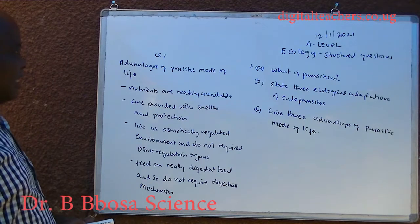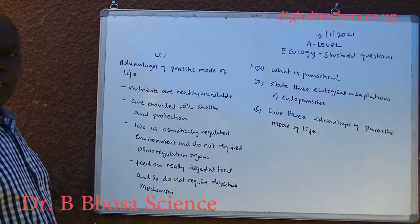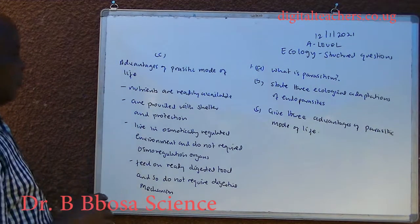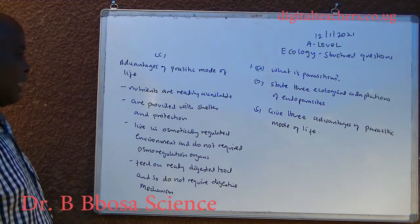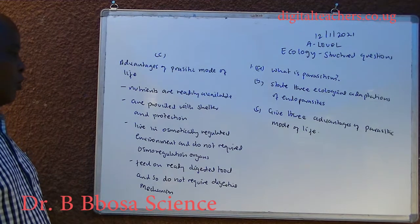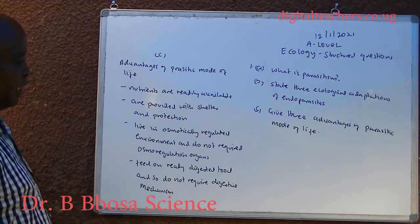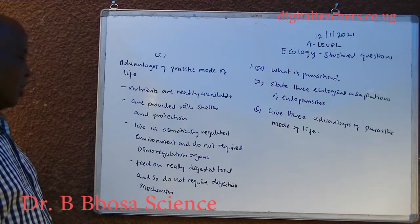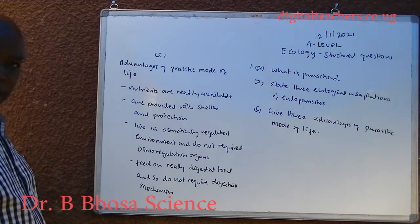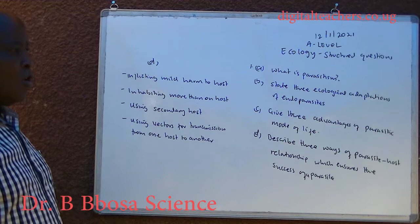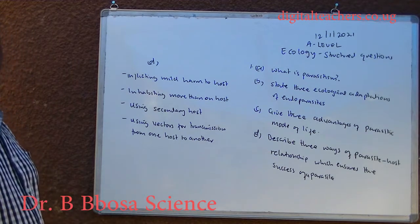Advantages of parasitic mode of life: Nutrients are readily available. They are provided with shelter and protection. They live in an osmotically regulated environment, so don't require osmoregulation. They feed on already digested food and so don't require digestive mechanisms. Describe three ways of parasite-host relationship which ensures the success of a parasite.